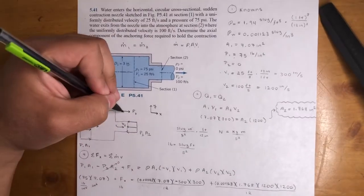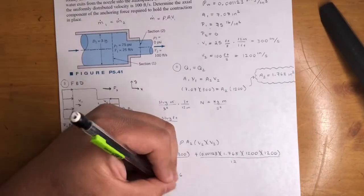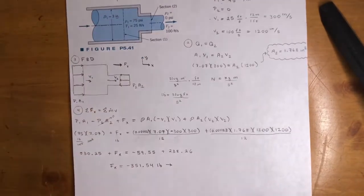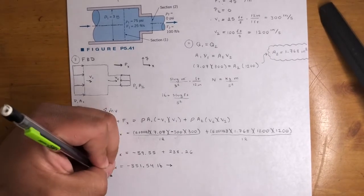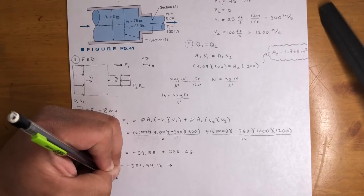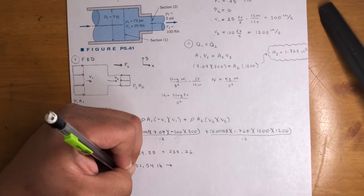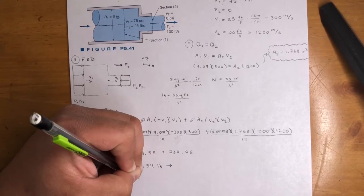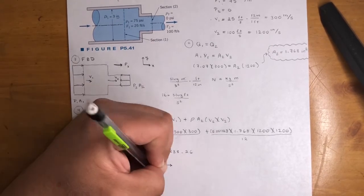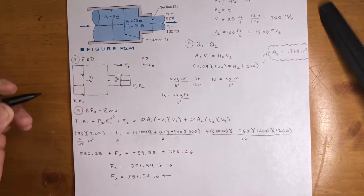And, we assumed it going this way. So, this way. Now, since it's a negative, that just means we assumed wrong. So, F of X is equal to positive 351.54 pounds in this direction.